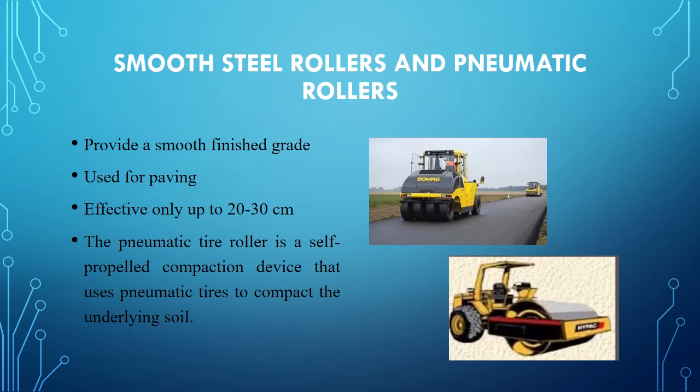The smooth steel roller and pneumatic roller are types of static rollers. They provide a smooth finish and are usually used for paving. They can be effective only up to 20 to 30 cm depth of compaction. These are a type of shallow compaction equipment.